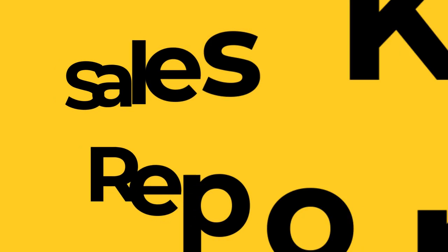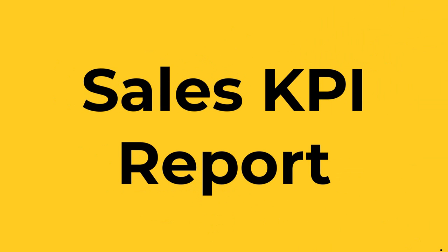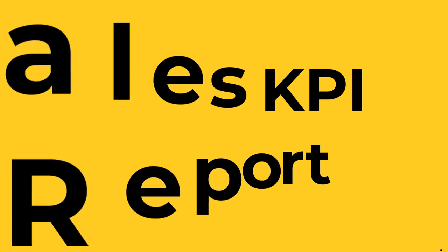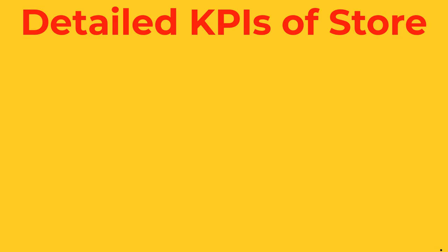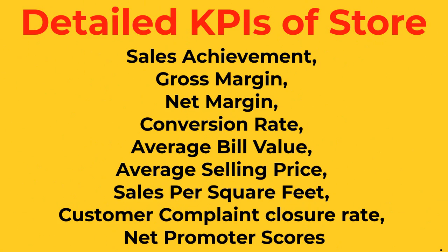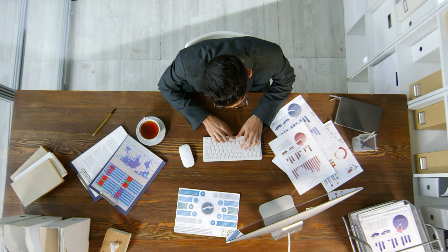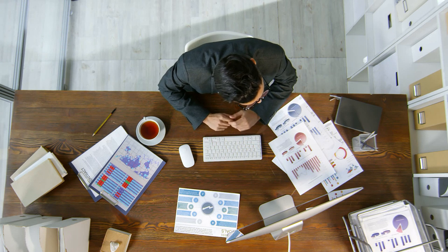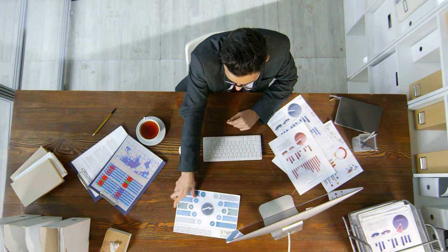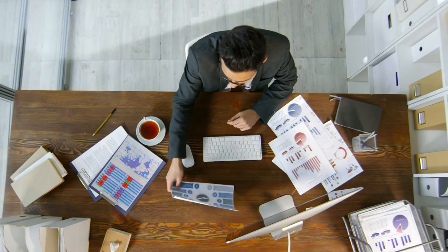The third report is the sales KPI report. This report has a detailed analysis of all the store's KPIs, which include sales achievement, gross margin, net margin, conversion rate, average bill value, sales per square feet, customer complaint closure rate, and net promoter scores. With the help of this report, one can analyze how well the store is performing and ensure all parameters are improved and KPIs are being met.